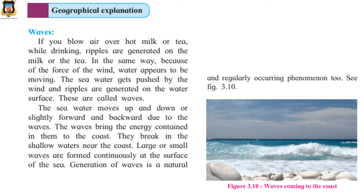Next, we have seen what are tides, and in that we saw two types of tides. What are the two types? Spring tide and neap tide. On new moon day and full moon days, the gravitational pull of the sun and the moon act in the same direction, leading to spring tides. So the gravitational pull is in the same direction, and that gives rise to spring tides.